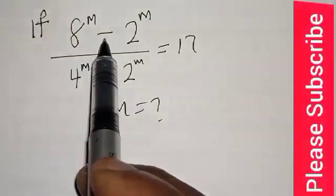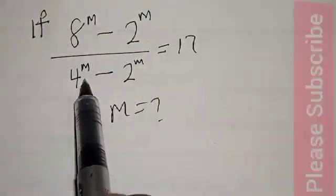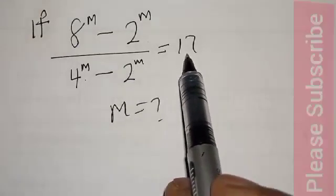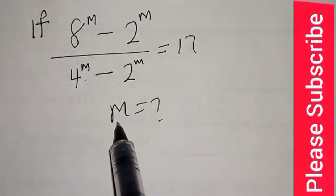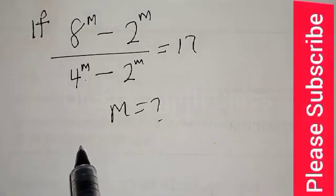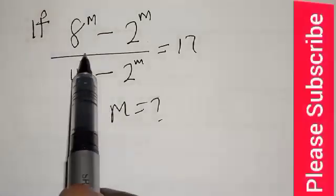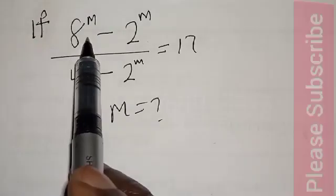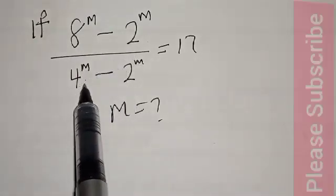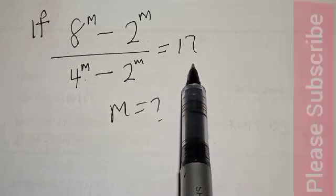If 8 raised to power m minus 2 raised to power m, over 4 raised to power m minus 2 raised to power m, is equal to 17, what is the value of m? Hi everyone, welcome to my class. In this class, we want to find the value of m from this given equation: 8 raised to power m minus 2 raised to power m over 4 raised to power m minus 2 raised to power m, equal to 17.